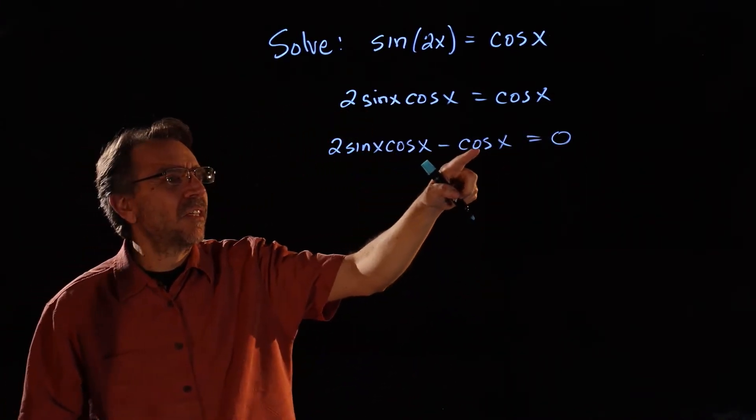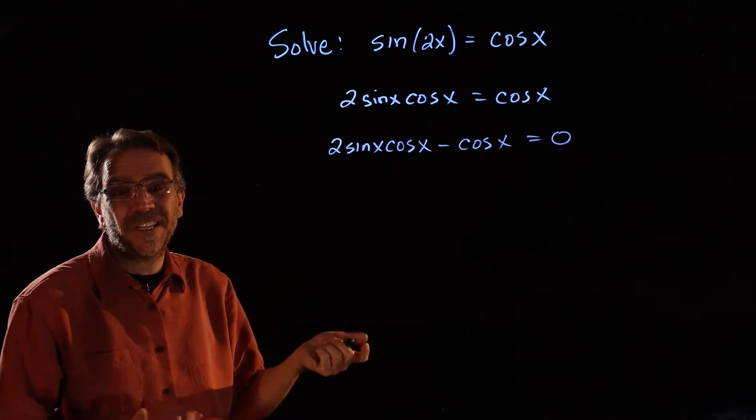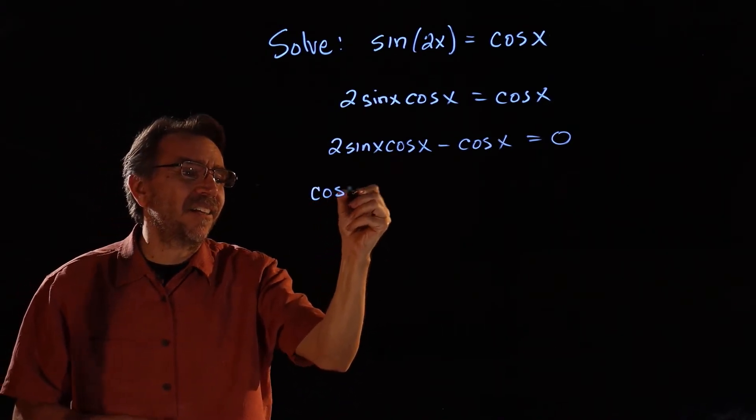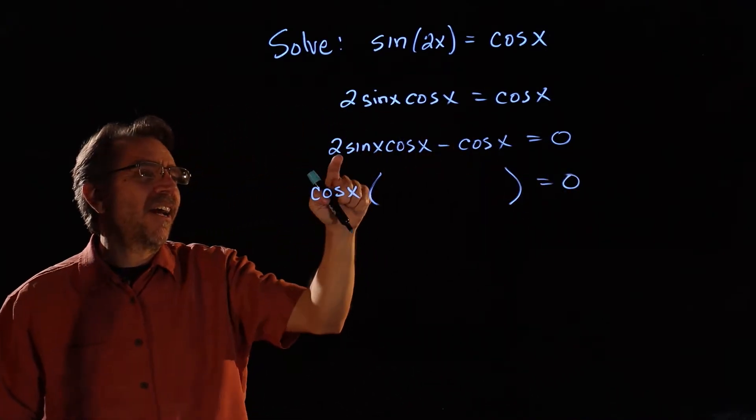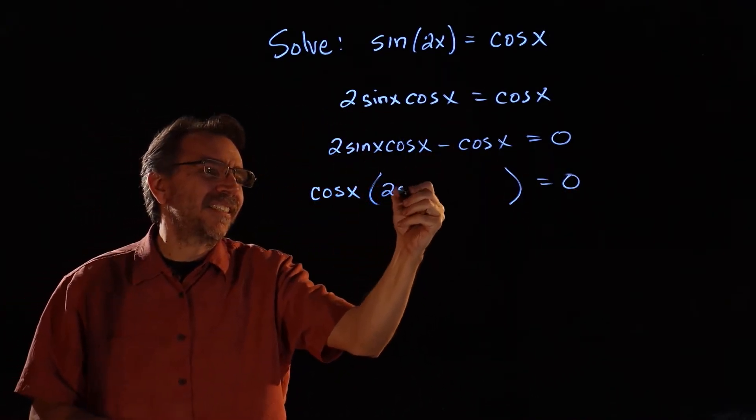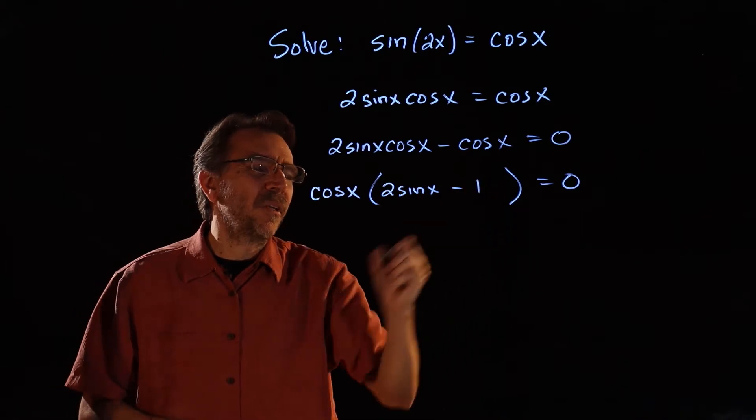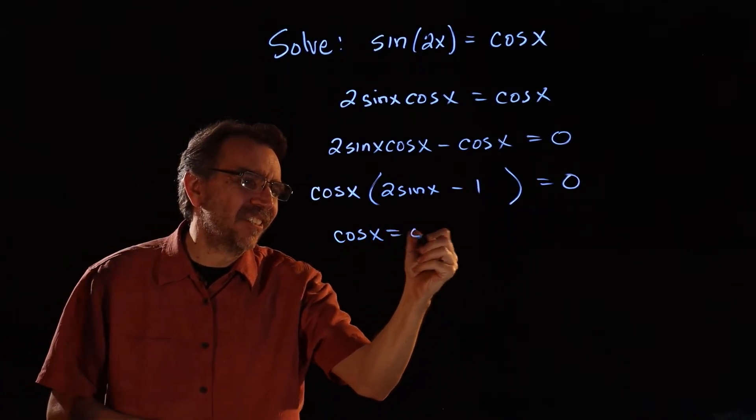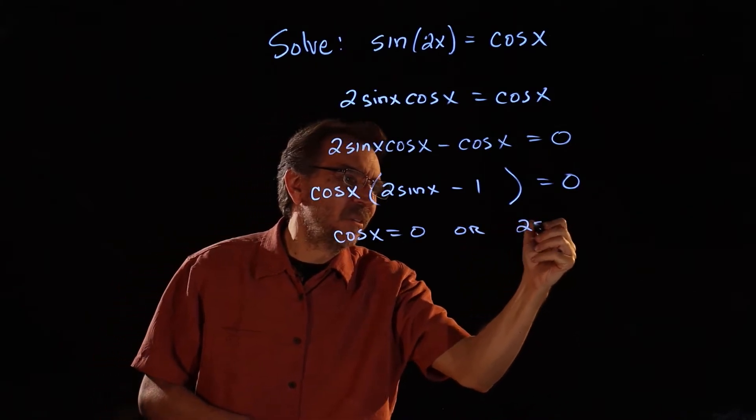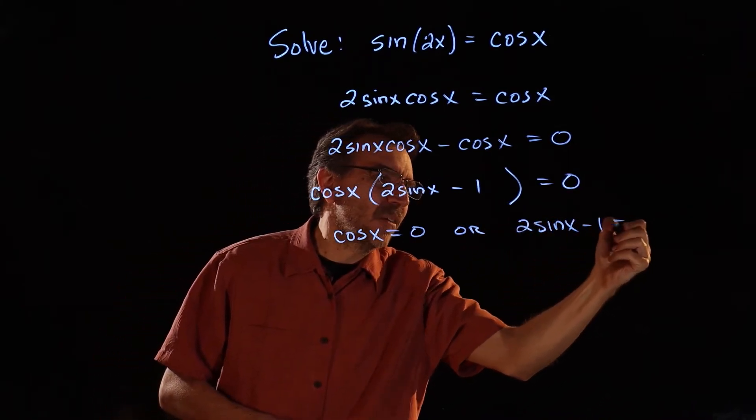When I do that, notice cosine x now becomes a GCF. So I can factor that out. So cosine x, when I factor that out, I'll be left with 2 sine x minus 1. And then setting each factor equal to 0, we have cosine x equals 0 or 2 sine x minus 1 equals 0.